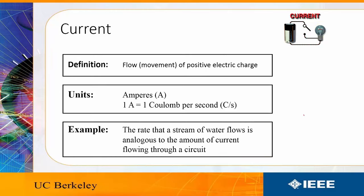So again, current is the flow of positive electric charge. The units are called amperes, or coulombs per second.